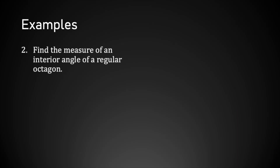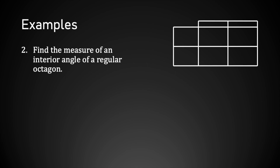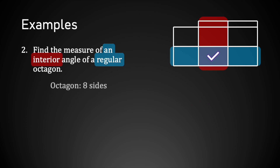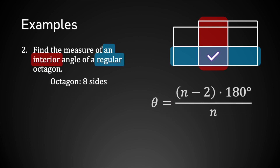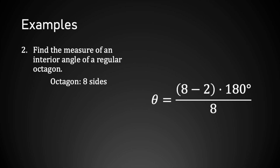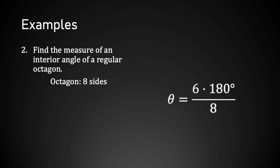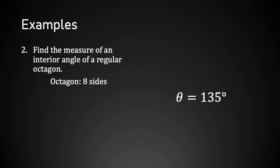Example 2: find the measure of an interior angle of a regular octagon. It asks for one angle and interior, so I'll use the formula from that part of the table. An octagon has 8 sides, so I replace n with 8. 8 minus 2 is 6, 6 times 180 degrees is 1,080 degrees, and 1,080 degrees divided by 8 is 135 degrees. So one angle in a regular octagon is 135 degrees.